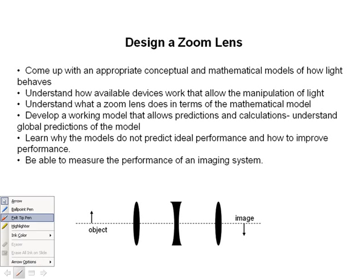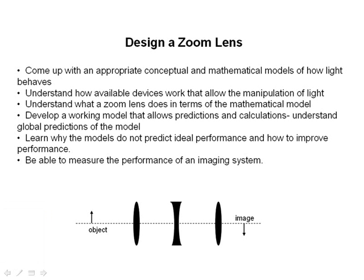As we move on with our series of mini-lectures, we are focusing on why the mathematical models that we've developed to describe optical systems don't predict ideal performance, and looking at ways to understand this non-ideality or aberrations, and also on how to improve performance.